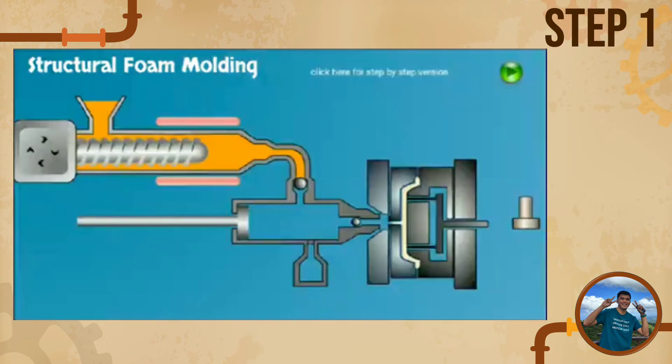For step 1, melted plastic has filled the injection unit and is ready to be injected into the accumulator. The large ball valve prevents any weeping into the accumulator. Heating elements and thermocouples maintain the desired melt temperature.